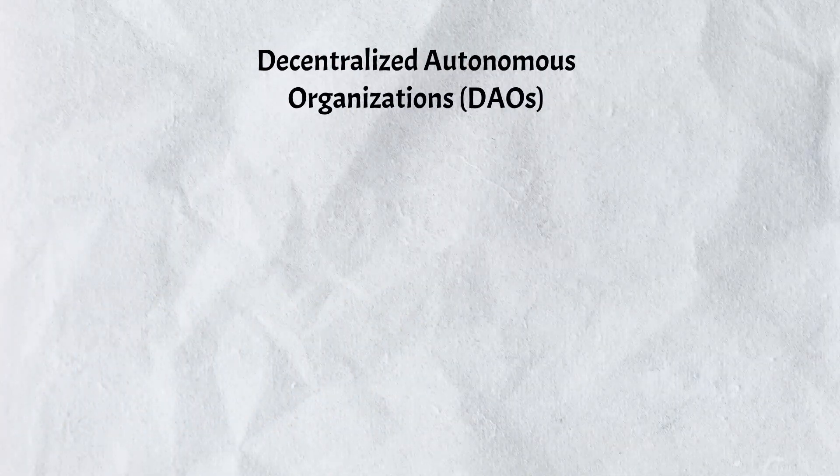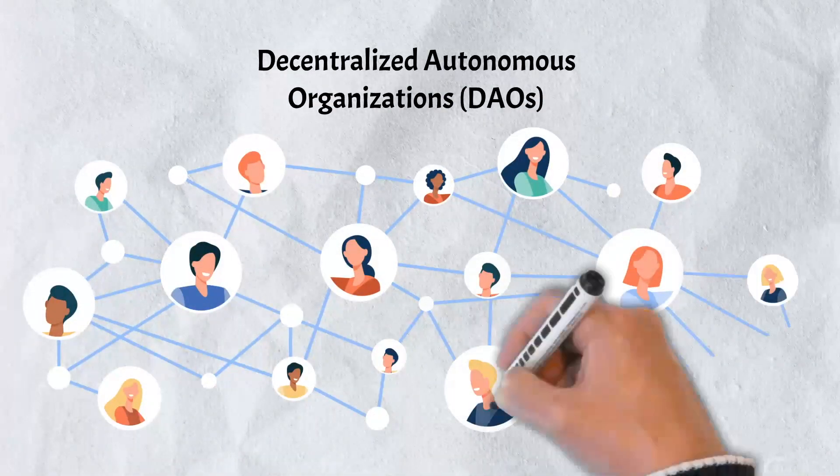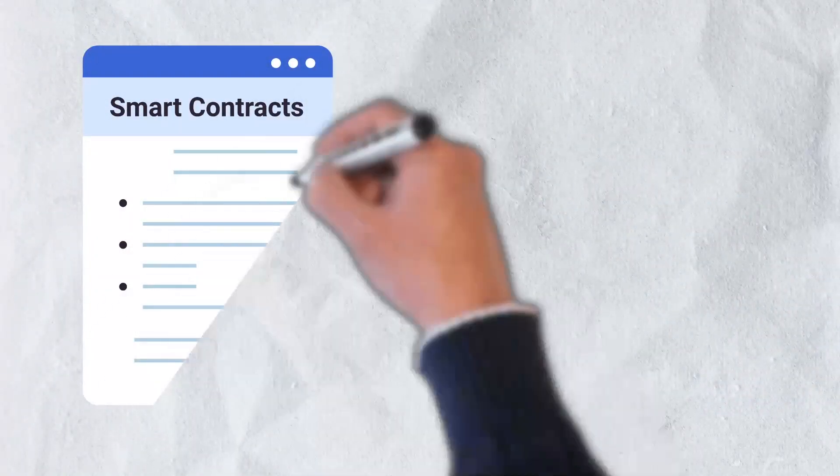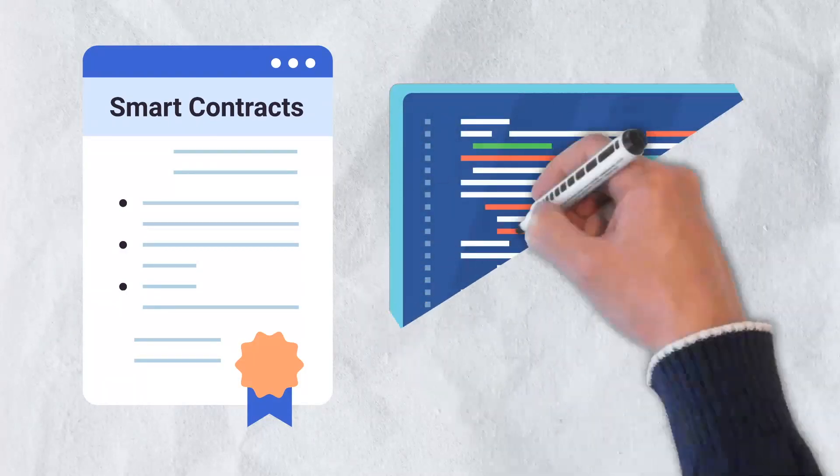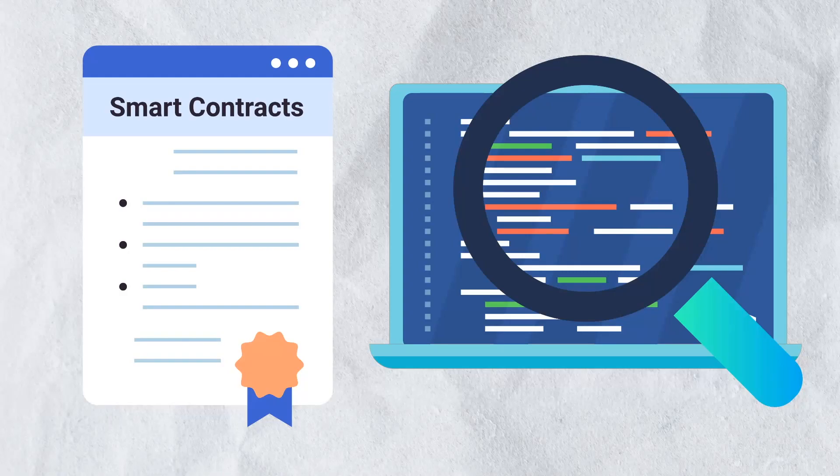In DeFi 2.0, decentralized autonomous organizations are used to combat centralization. DAOs are community-run organizations with no central authority. They are completely autonomous and transparent. Smart contracts establish the ground rules and carry out the agreed-upon decisions. At any given time, proposals, voting, and even the code itself can be publicly audited.